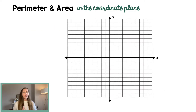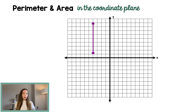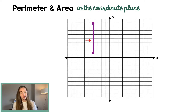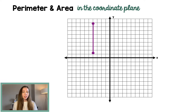So let's say on a coordinate plane you had some lines. If you had a vertical line, instead of trying to apply the distance formula, the best approach is just to count it. We count one, two, three, four, five, six, seven, eight — this is eight units long. Just count it out.